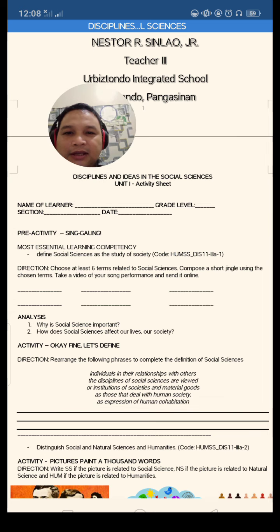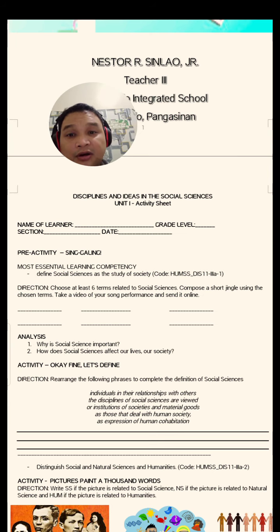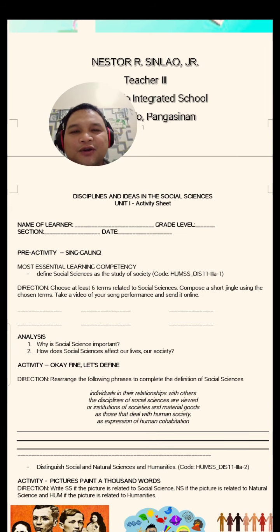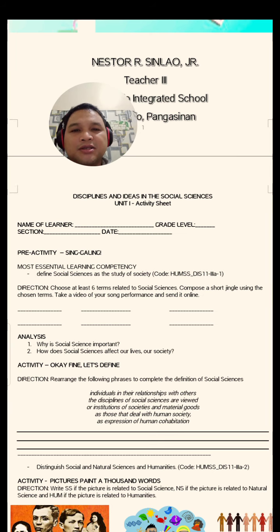For your first activity, what you're going to do is, in defining social sciences as a study of society — this is your most essential learning competency — you're going to choose at least six terms related to social sciences, and you're going to compose a short jingle using these terms. Gagawa kayo ng isang jingle gamit ang iba't ibang salita na konektado sa term na social sciences.